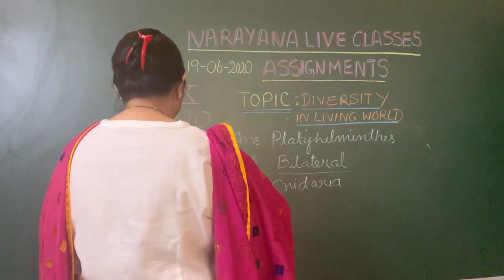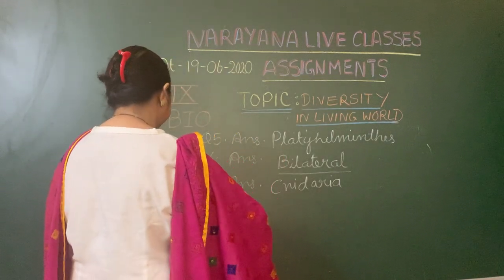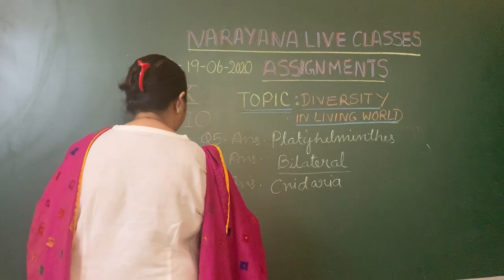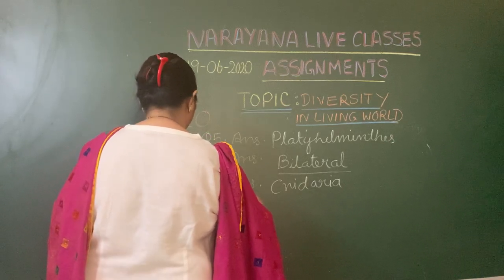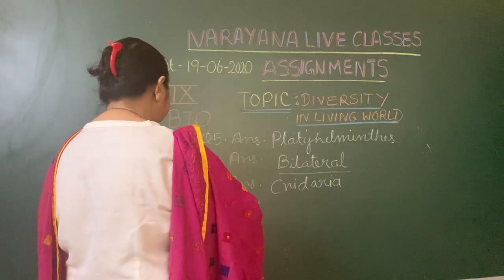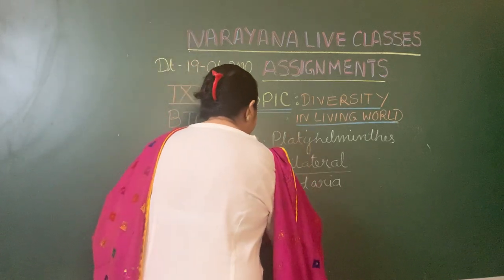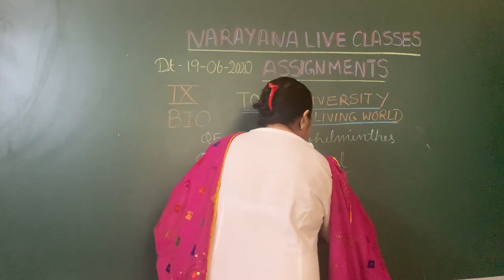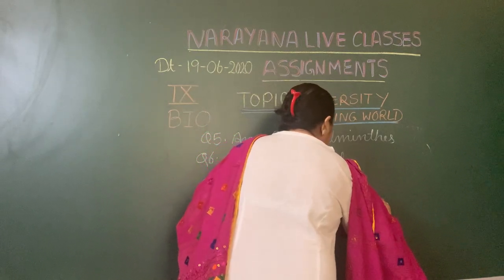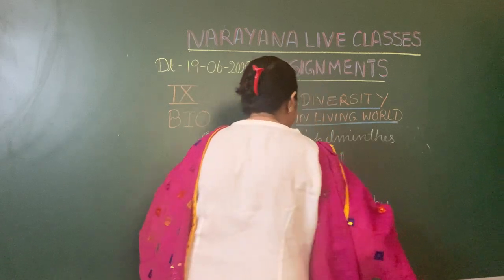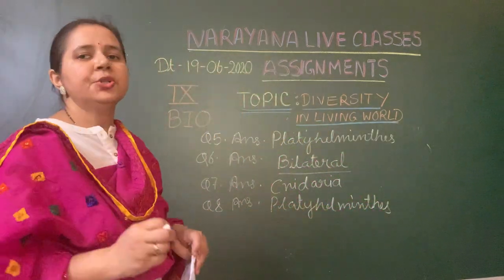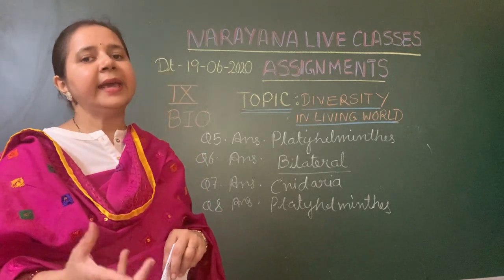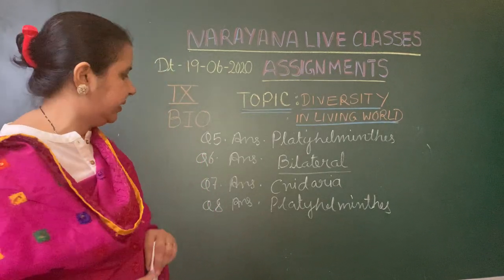Question number eight: dash are either free living or parasitic. Who are either free living or parasitic? The answer is Platyhelminthes. Platyhelminthes consists of all the flat worms, and they are either free living or parasitic inside other organisms.